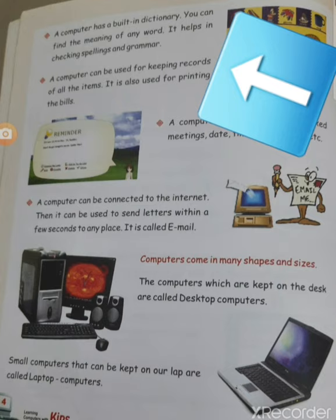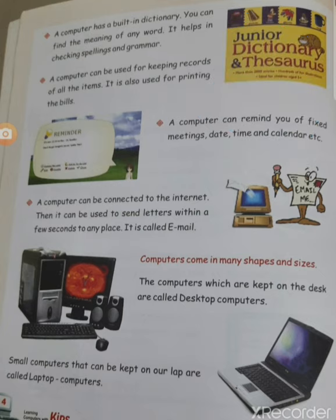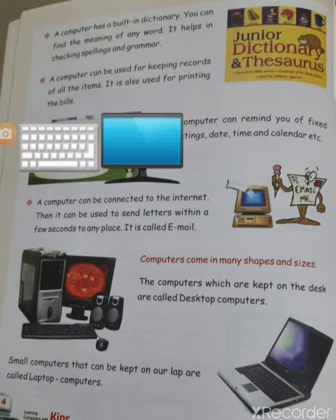A computer has a built-in dictionary. You can find the meaning of any word, and it helps in checking spelling and grammar. If you want to type anything in a Word file, you open MS Word and type — it will automatically show a red underline if you have a grammar or spelling mistake. You can right-click with the mouse and check the correct spelling and fix it.